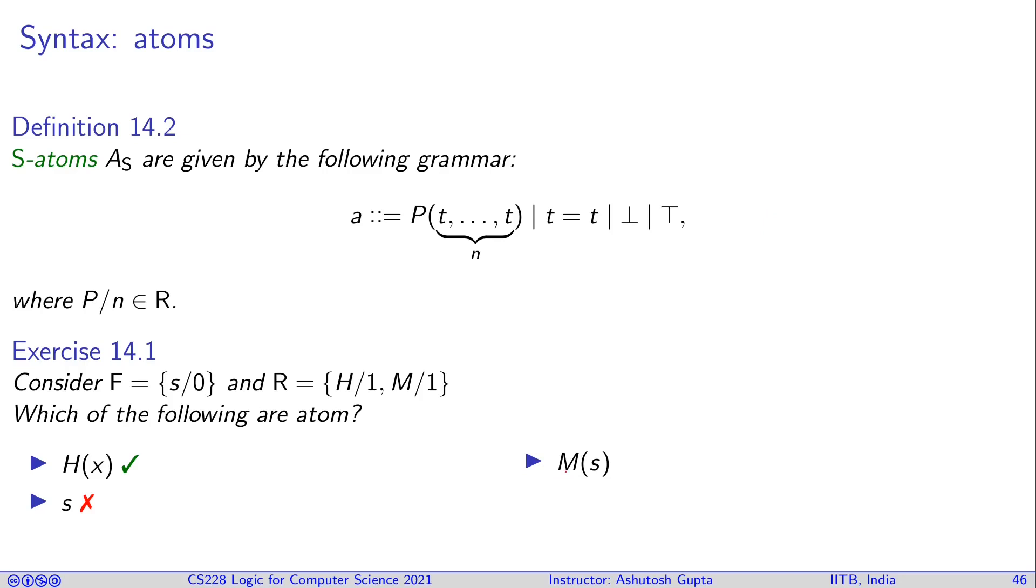Let's look at m(s). M is applied on function s, which doesn't have a parameter, so this is a term. Then I applied m on s. M has a single parameter, so it's an atom.